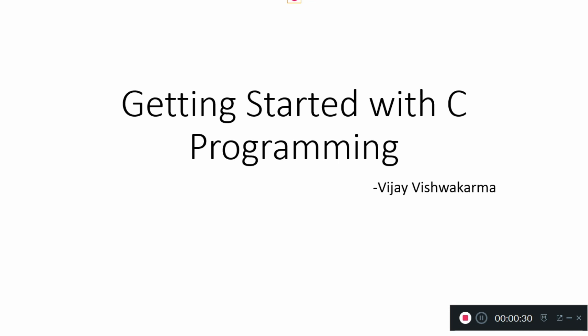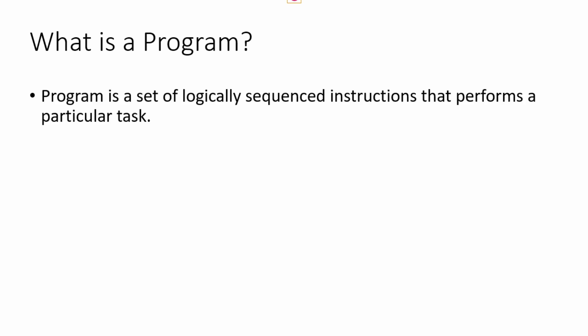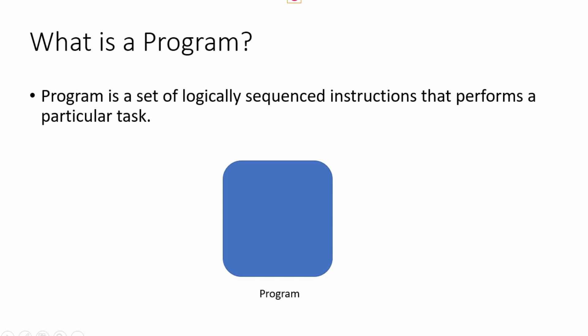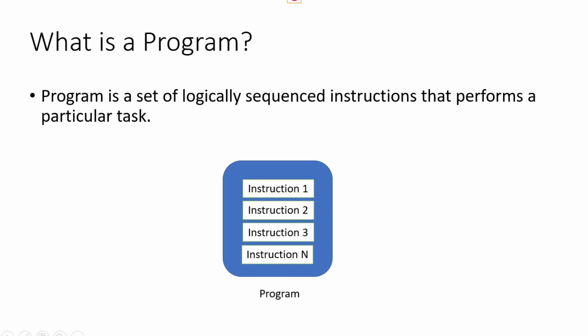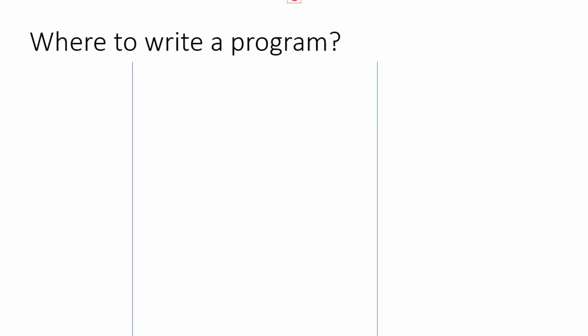So the basic question: what is a program? A program is a logically sequenced set of instructions that performs a particular task. A program is made up of instructions that perform checks, process data, accept input, and display output. Any program you write will take an input — if not, the program will assume some internal input — and the program will generate some output. That is how you should view a program.